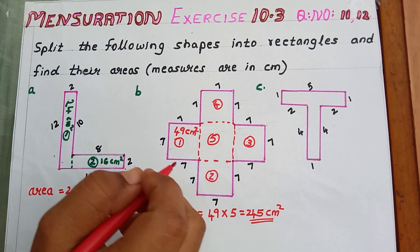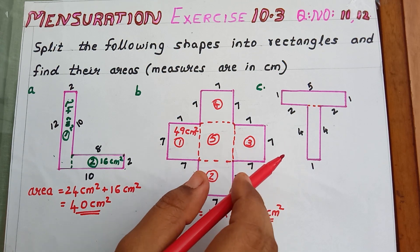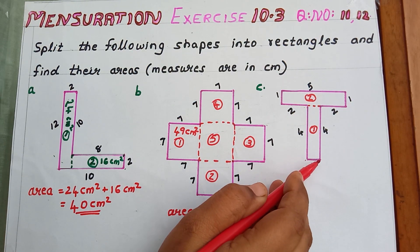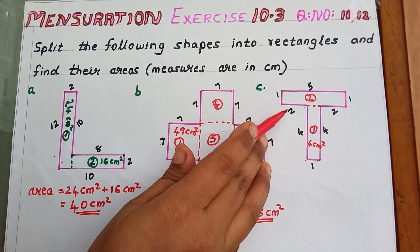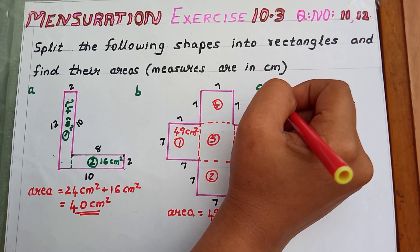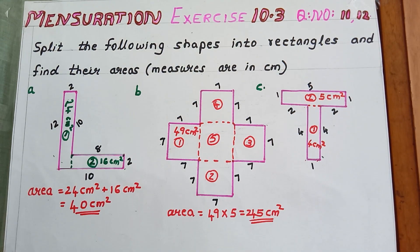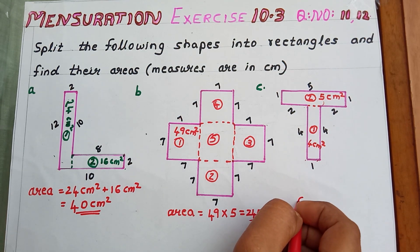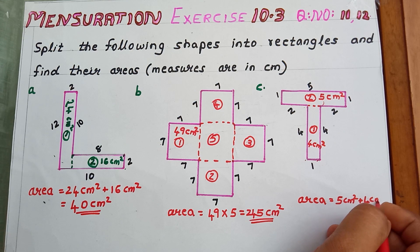Thinking about the next shape, question number C, we can divide it like this. Now we got two rectangles. The length of the first rectangle is 4 cm and breadth is 1 cm, so area equals 4 into 1 equals 4 cm². The next rectangle has length 5 cm and breadth 1 cm, so 5 into 1 equals 5 cm². To get the total area we add both: 5 cm² plus 4 cm² equals 9 cm².